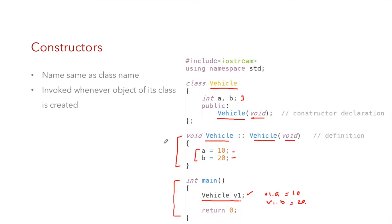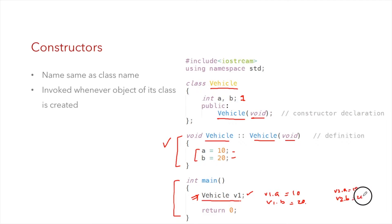The call to the constructor is made as soon as the object is created. Similarly, if you have another object v2, whenever you declare it and memory is allocated to it and its data members, the constructor is called — v2.a becomes 10 and v2.b becomes 20. Note that constructors do not have any return value; they are special functions in object-oriented programming.